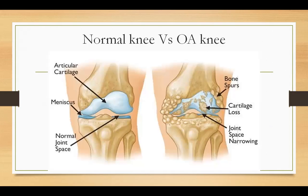In this image you can see the normal knee versus the osteoarthritic knee. In the normal knee, articular cartilage is present, the meniscus is intact, and the joint space is normal. In the osteoarthritic knee, there is loss of cartilage, decreased joint space — that is joint space narrowing — and bone spurs are present.